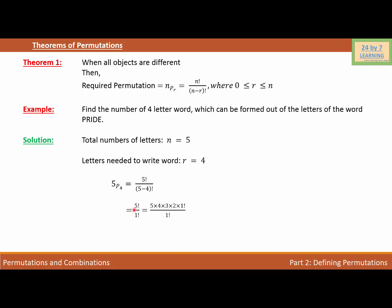So factorial 5 is factorial 5 and then factorial 5 minus 4 is basically factorial 1. So we will write factorial 1 which is over here and that is equal to we are writing factorial 5 as 5 times 4 times 3 times 2 times factorial 1 over factorial 1.